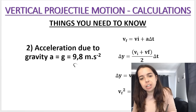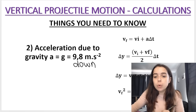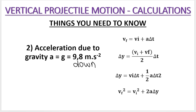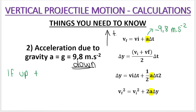Almost all of the equations have an A in them, so when you substitute in your value for A, you'll substitute in 9.8 meters per second squared. Just be careful — if you choose up as positive, remember that acceleration due to gravity is always down, so it needs to be substituted in as a negative. If up is positive, acceleration is negative. If down is positive, acceleration is positive because acceleration is always down. It's so important to be aware of your direction.